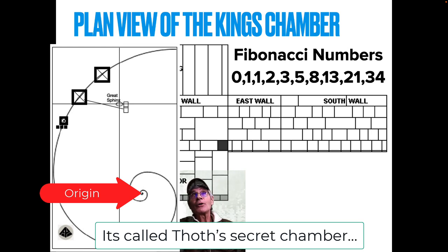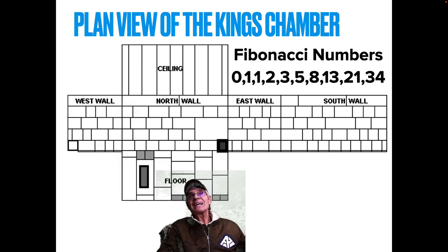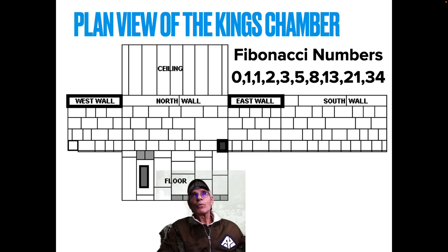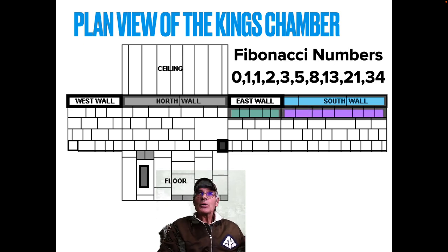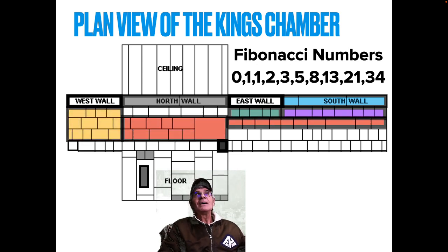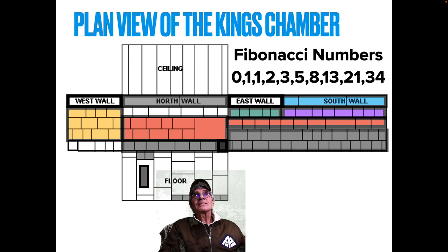Let's see if the Fibonacci numbers are in the King's Chamber. There's zero because that's the entrance — not a block. West wall on top: one block. East wall on top: one block. So 0, 1, 1. Two blocks on the north wall. Three blocks on the top course of the south wall. Five underneath the second course of the east wall. Eight in the second course of the south wall. Thirteen underneath the west wall. Then 21 blocks you can see in the north, east, and south wall. And then 34 blocks right there. Incredible — the Fibonacci numbers. This just scratches the surface; there's so much more here.